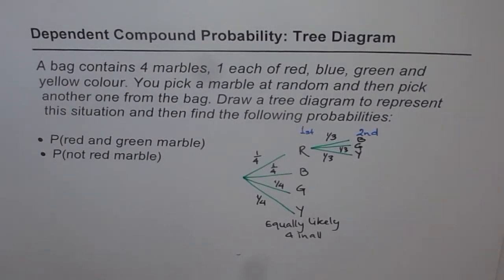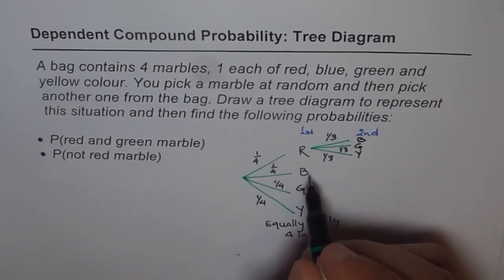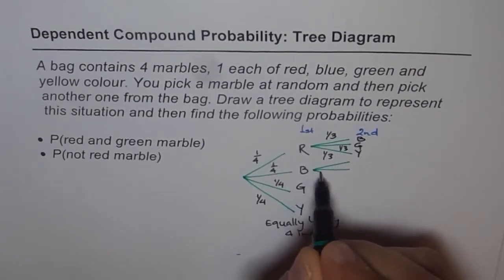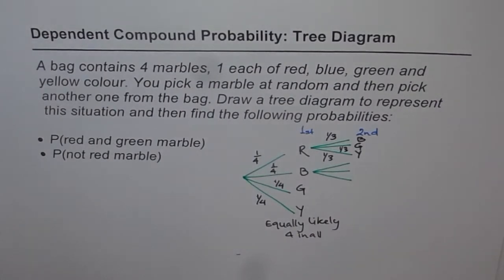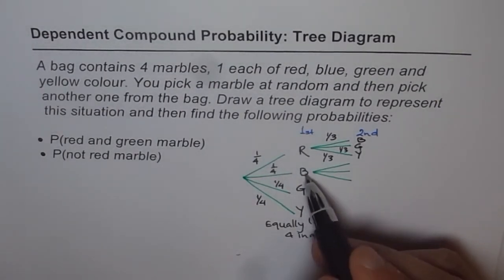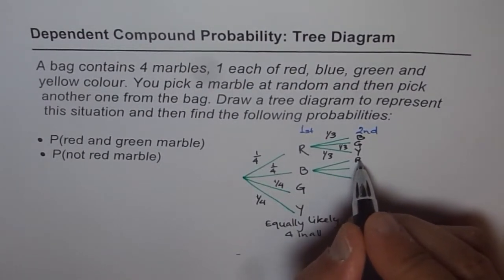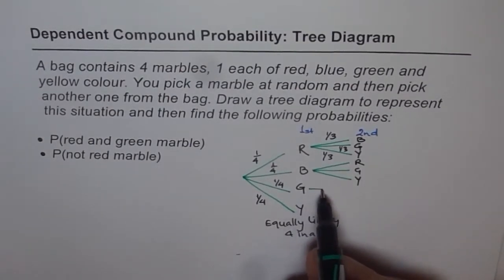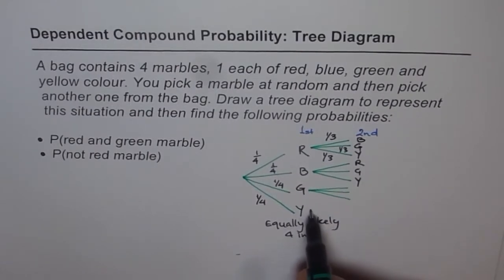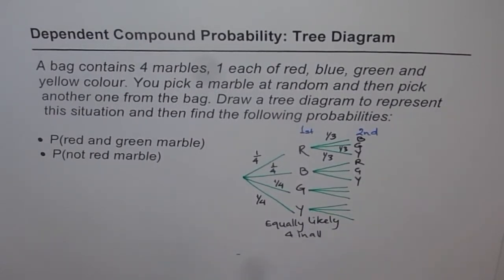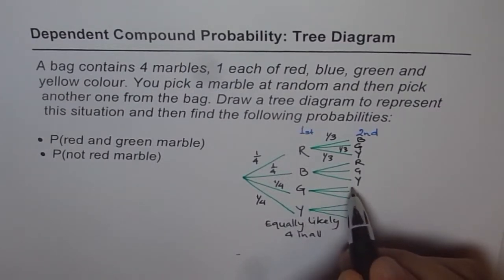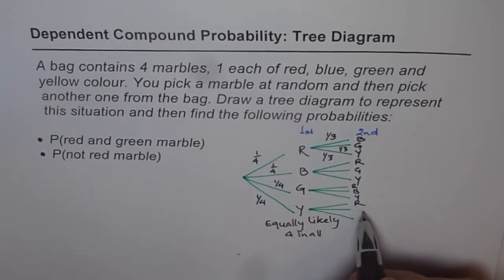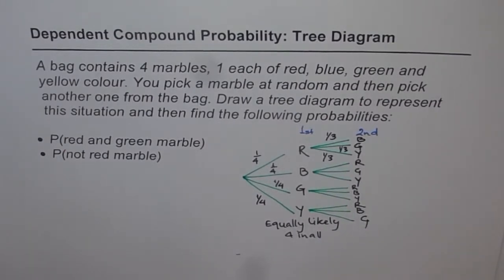Now we can continue and fill up the rest of the tree diagram. If blue was picked first, the three possibilities for the second draw are red, green, or yellow — since blue has been removed. Similarly, for green picked first, the second draw gives red, blue, or yellow. And for yellow picked first, it is red, blue, or green. These are all the possibilities.